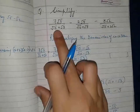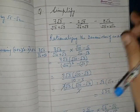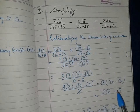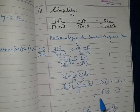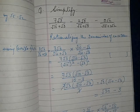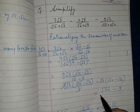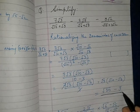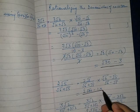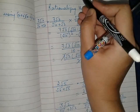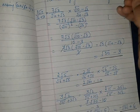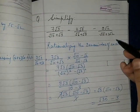We have rationalized each of the three terms. Now we substitute the values: first term gives (√30 − 3), second term gives (2√30 − 10), and third term gives (−√30 + 6).